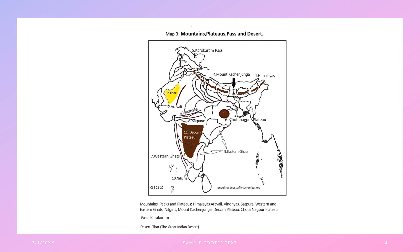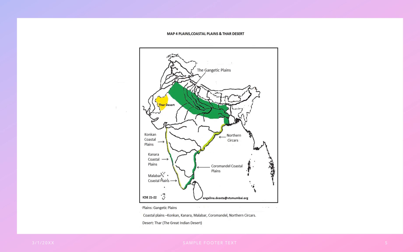Now we look at the plains, coastal plains, and Thar Desert. The Thar Desert is here. The Gangetic Plain is a huge portion of the northern rivers — Yamuna, Ganga, and its tributaries — coming down to the River Hooghly. Please note you do not mark Nepal and Bhutan; it has to be within India. Then we have the two eastern coastal plains: Northern Circars and Coromandel Plains. The western plains are Konkan Coastal Plains, Kanara Coastal Plains, and Malabar Coastal Plains.